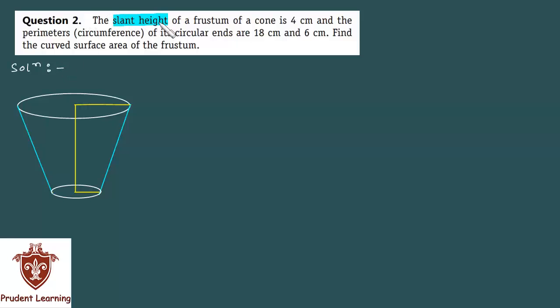The slant height of a frustum of a cone is 4 cm and the perimeters, i.e. circumference, of its circular ends are 18 cm and 6 cm. Find the curved surface area of the frustum.